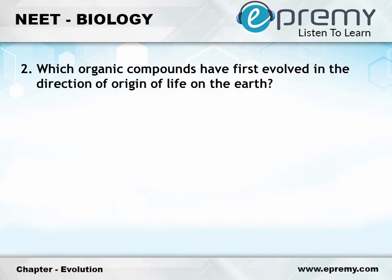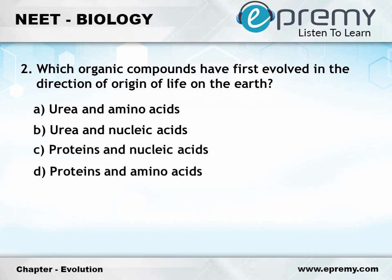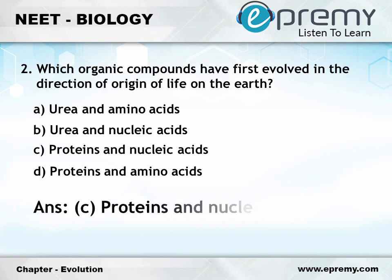Question number 2: Which organic compounds first evolved in the direction of origin of life on the earth? Option A: Urea and amino acids. Option B: Urea and nucleic acids. Option C: Proteins and nucleic acids. Option D: Proteins and amino acids. And the answer is Option C: Proteins and nucleic acids.